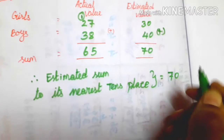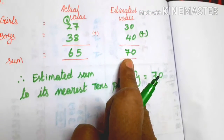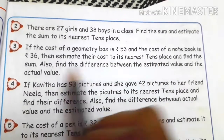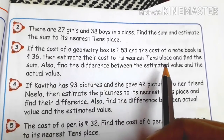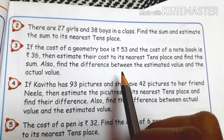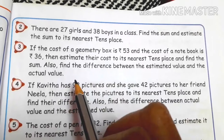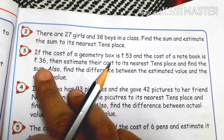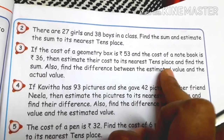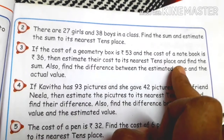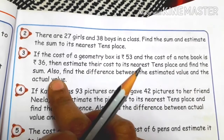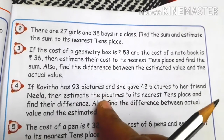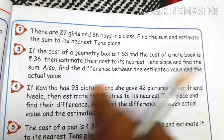So the estimated sum is 70. Next problem: the cost of your geometry box is 53 and the cost of your notebook is 36. Estimate their cost to the nearest 10th place and find the sum. Also find the difference between the estimated value and the actual value. The actual sum: 3 plus 6 is 9, and 5 plus 3 is 8, so the actual sum is 89.